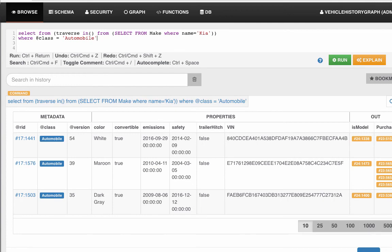Now all is right in the world. We only have three vertices returned. They're the automobiles that are KIAs.